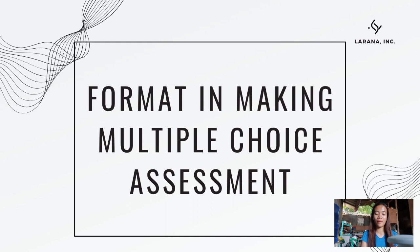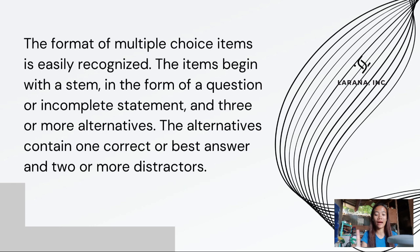Next is the format in making a multiple choice assessment. First, items begin with the STEM. The STEM is the question or incomplete sentence, and three or more alternatives — that is, the choices. The alternatives contain one correct or best answer and two or more distractors. The distractors should not be obviously wrong; they should be similar in meaning to the best answer so that students have to think carefully.